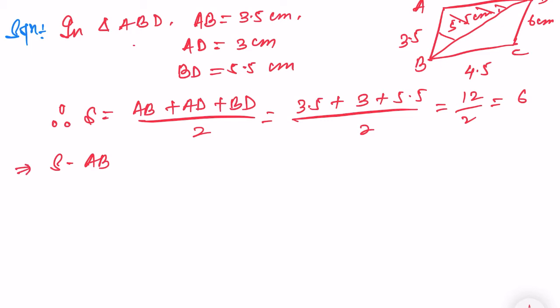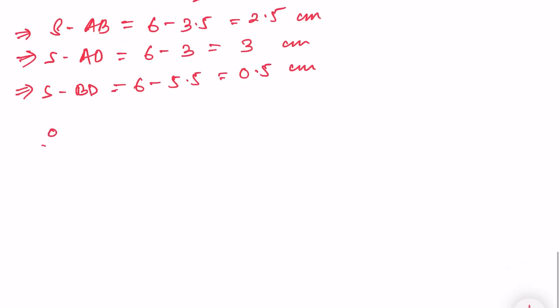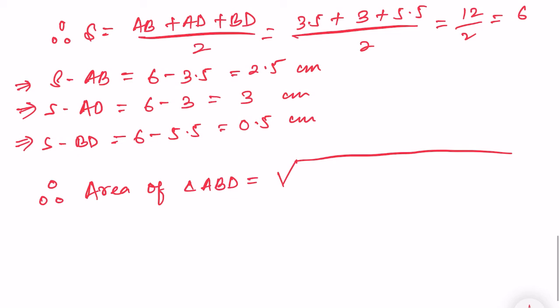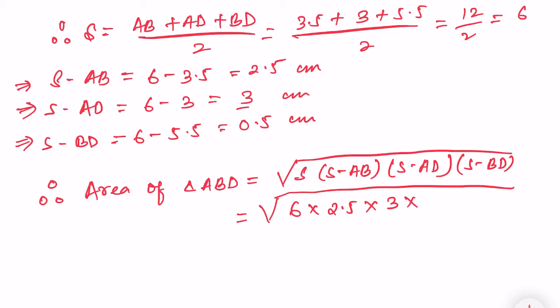So S minus AB will be equal to 6 minus 3.5, so it will be 2.5. S minus AD will be equal to 6 minus 3, it is 3. S minus BD, S is 6, BD is 5.5, which will be 0.5. These are all cm. So therefore, area of triangle ABD is equal to root over S into S minus AB into S minus AD into S minus BD.